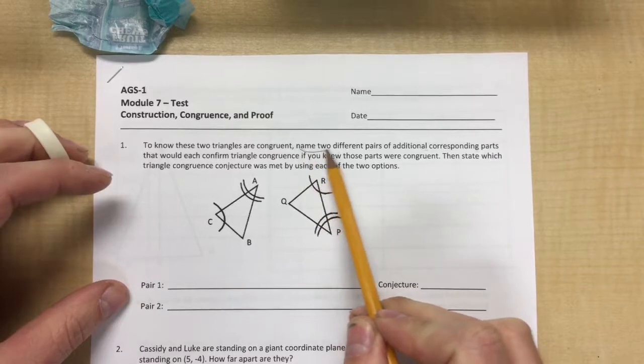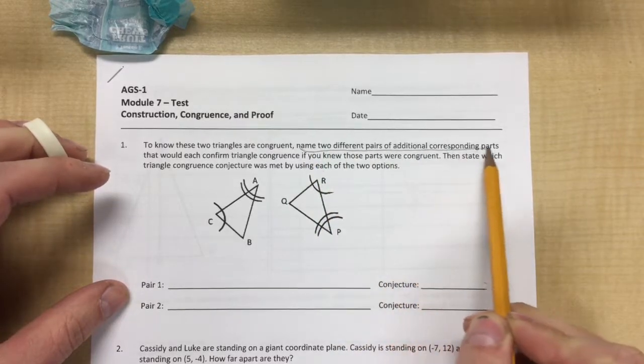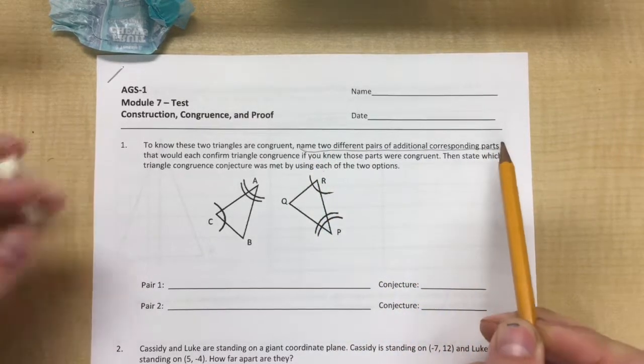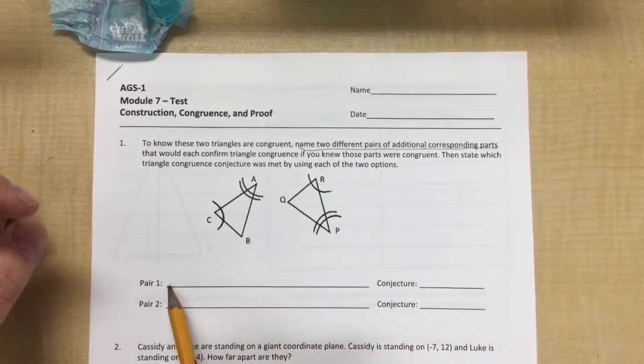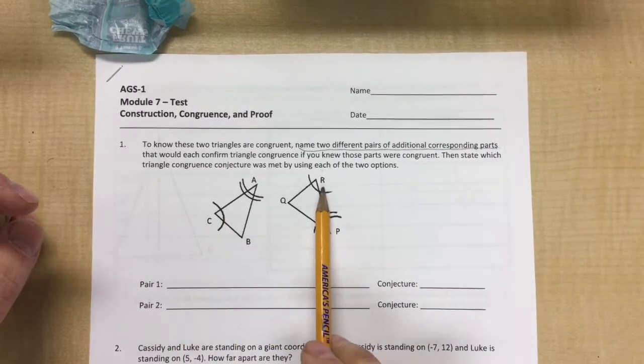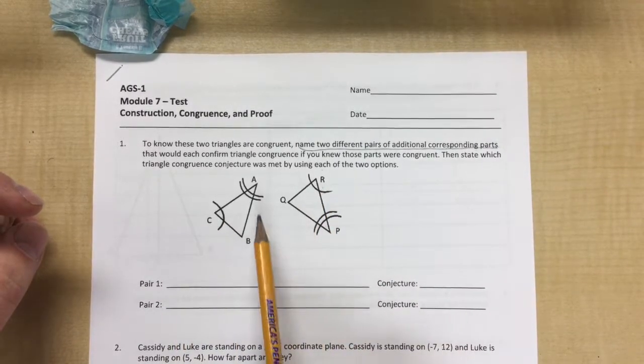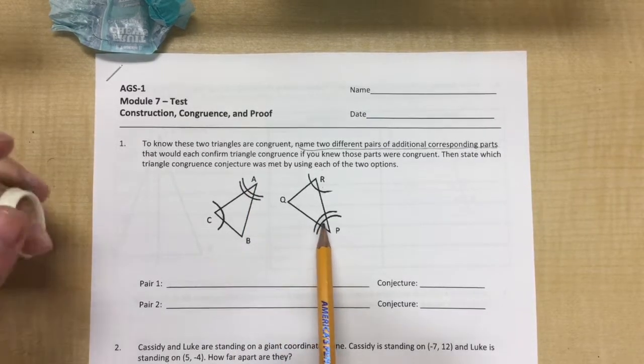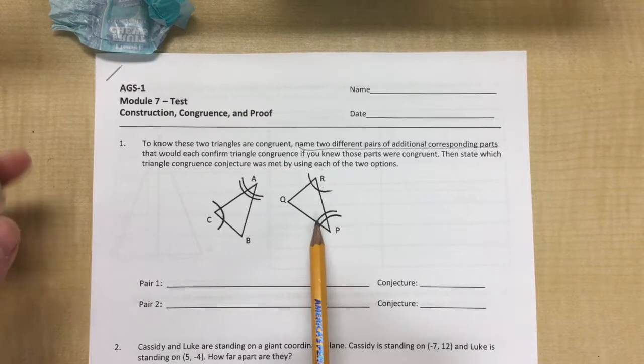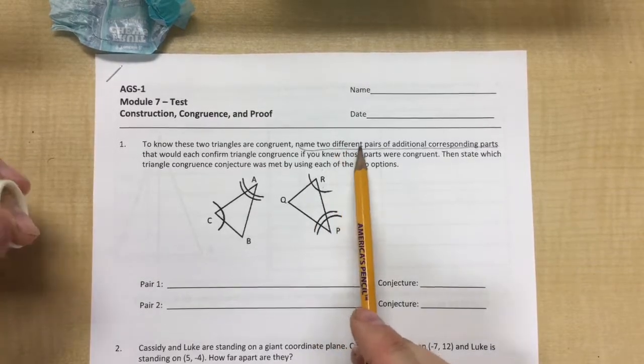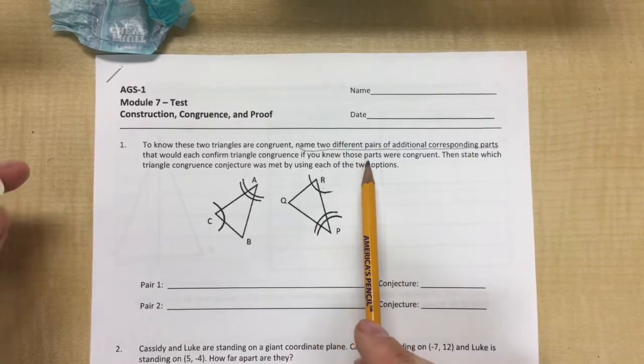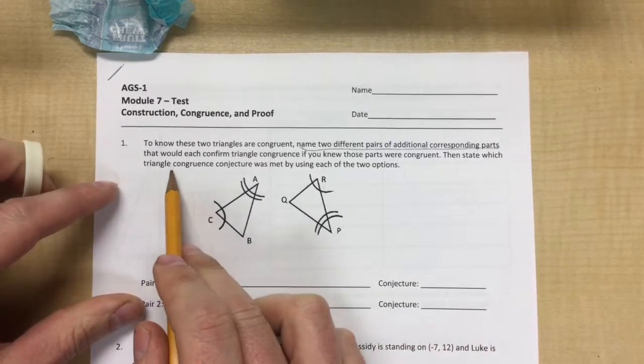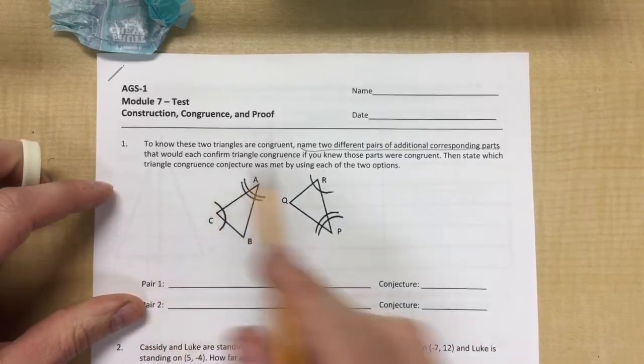So on the test some people wrote right here angle C equals angle R and then for the other one they wrote angle A equals angle P. I already know that it's marked, so we have to name two other things that would let us use the triangle congruence conjectures.